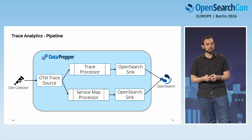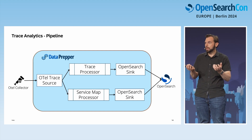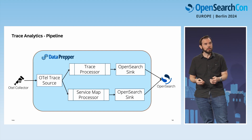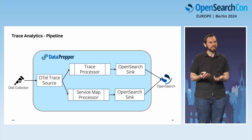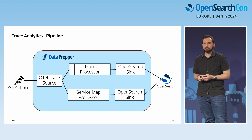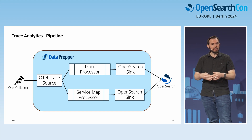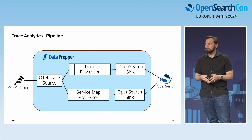We also have a service map processor — another stateful processor. It collects spans and builds a map of service relationships. If one application calls another, we see an edge connecting those two, and we get information such as error rates between services. Both pipelines send data to OpenSearch, typically the same cluster but to different sinks, which works well with the observability plugin.